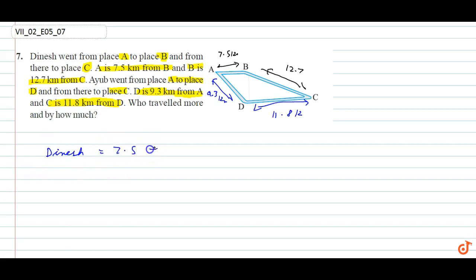7.5 plus 12.7. So kitna ahoaye? 20.2 km chala usna total.